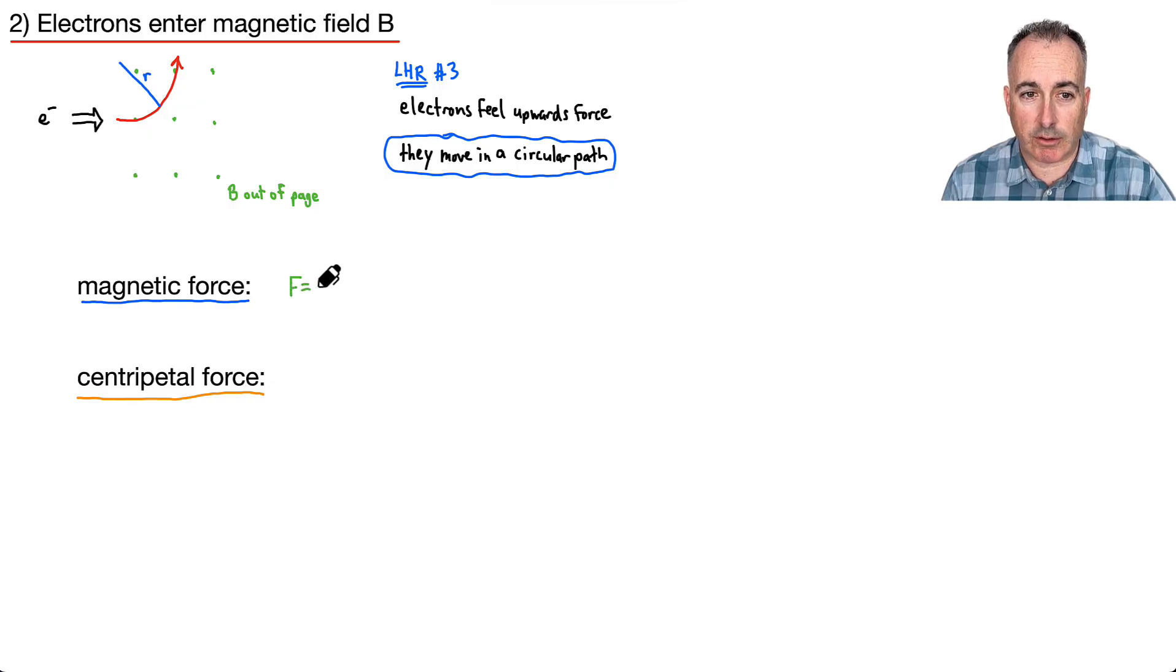So the force is just QVB. Because it's an electron, I can say e, so the force equals eVB. I'll designate that with a little M for magnetic force. And centripetal force, remember from your data booklet, we have centripetal acceleration which is v squared over r, so we throw an m in front: m v squared over r.